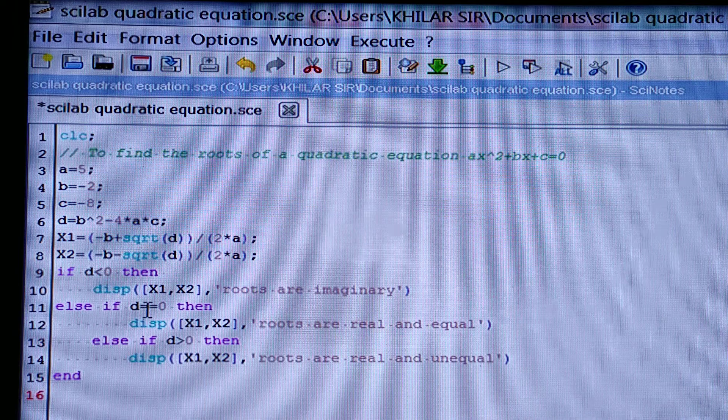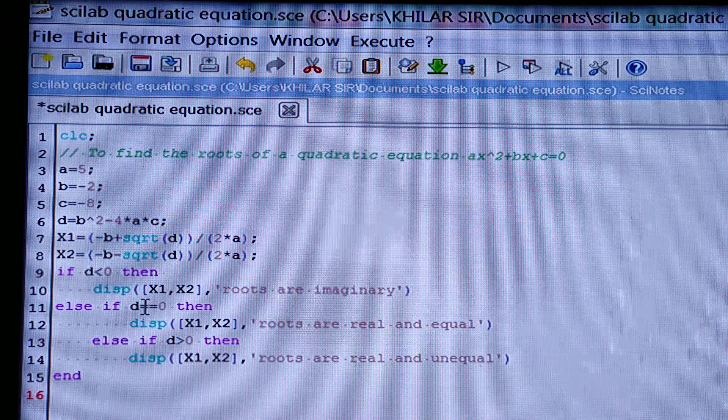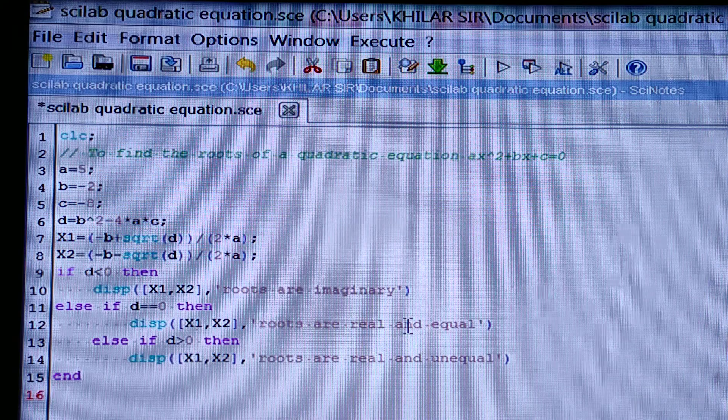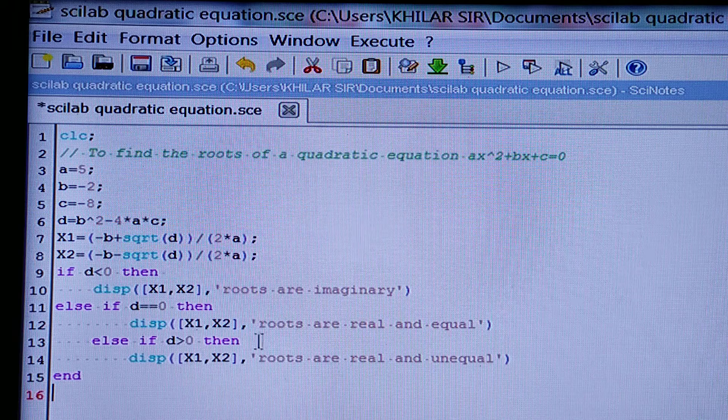And else, if D is equal to 0, you should write double is equal to, then display X1, X2, roots are real and equal. If the discriminant is equal to 0, then the roots are equal.